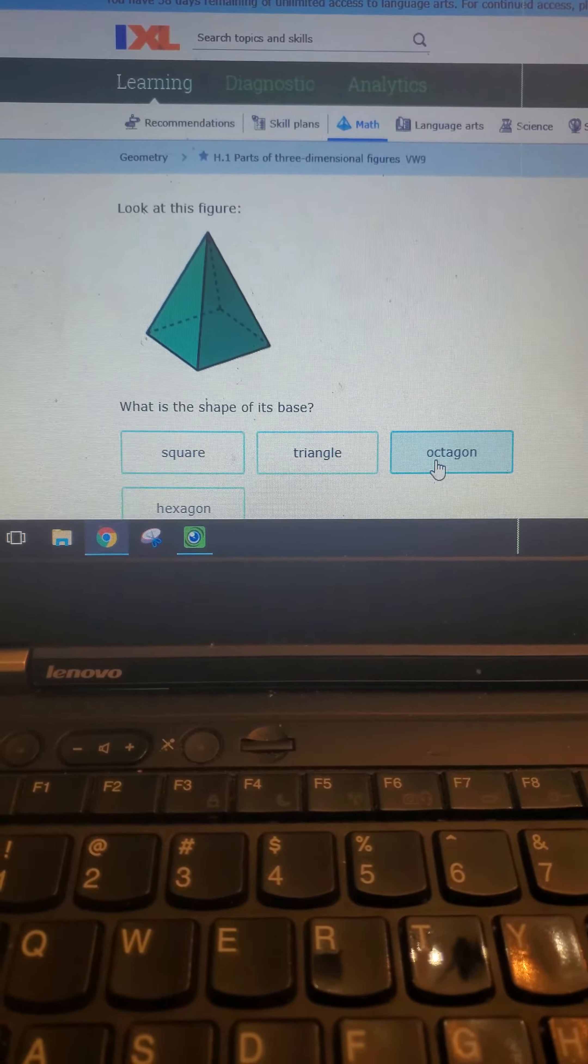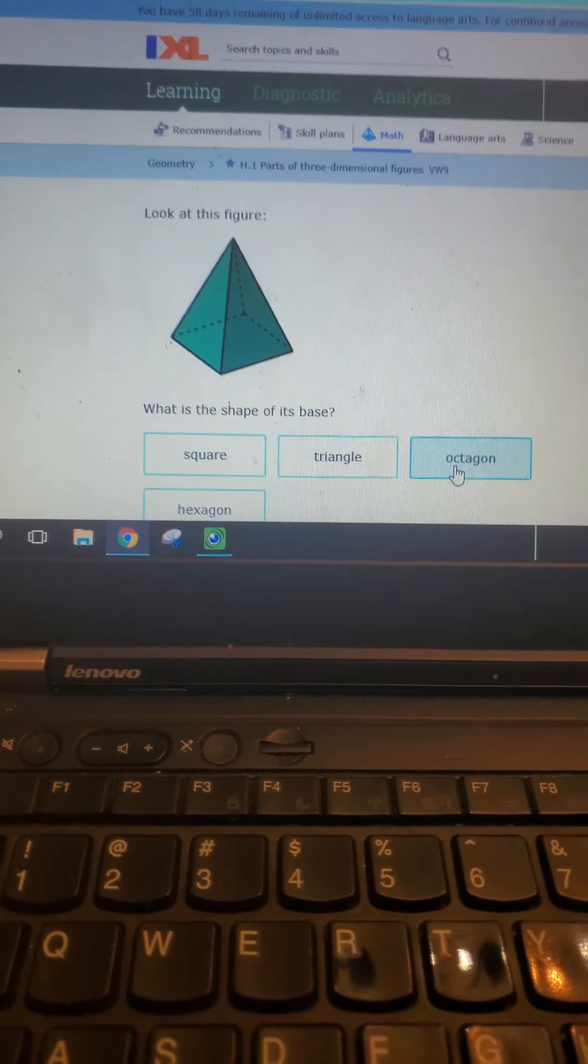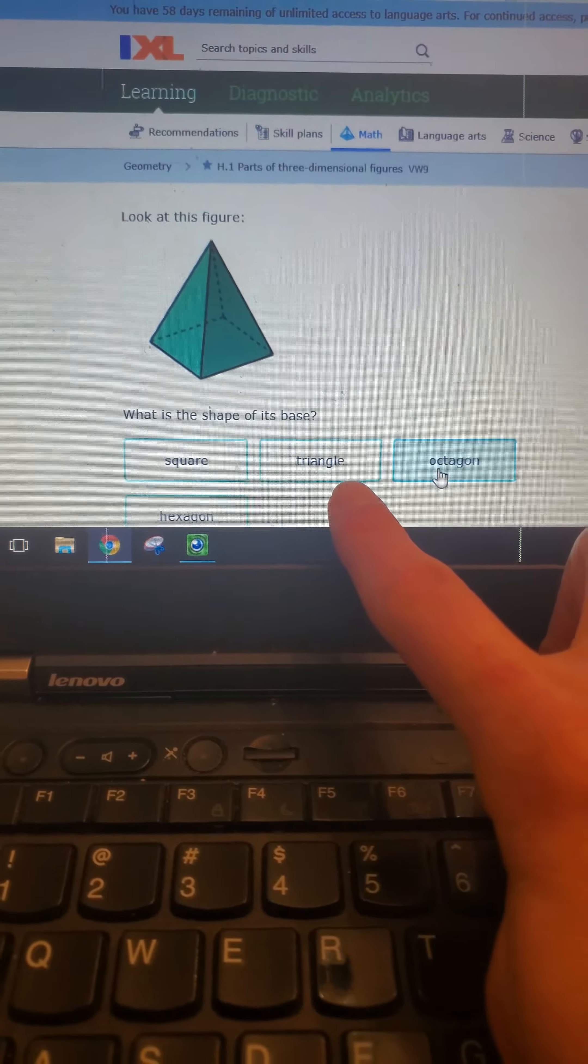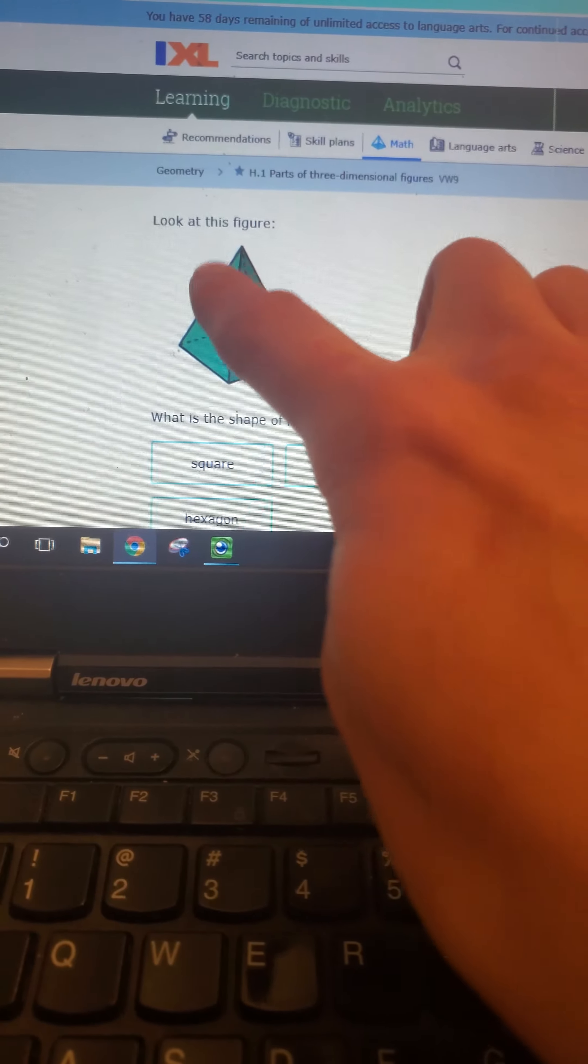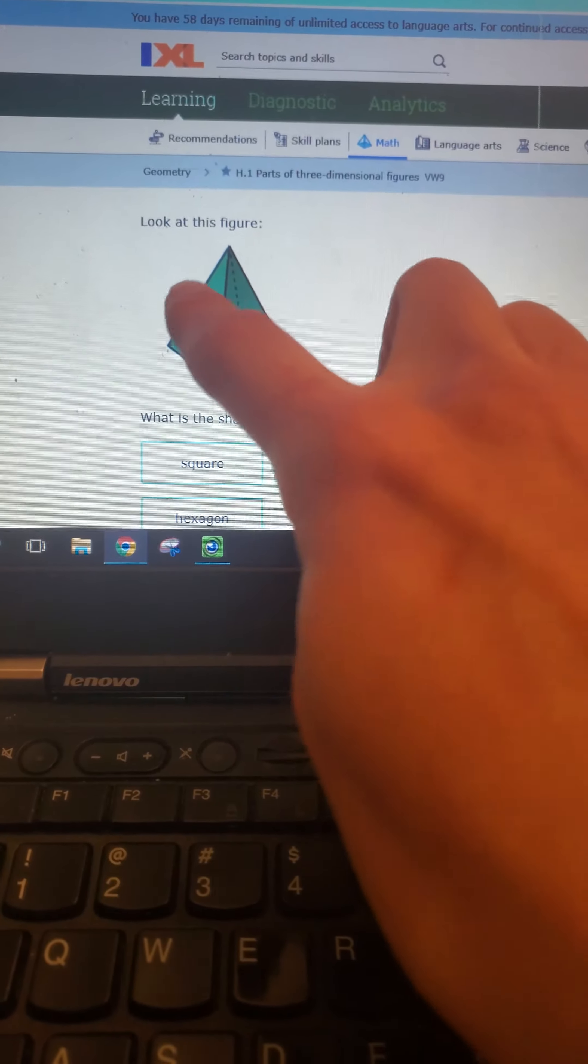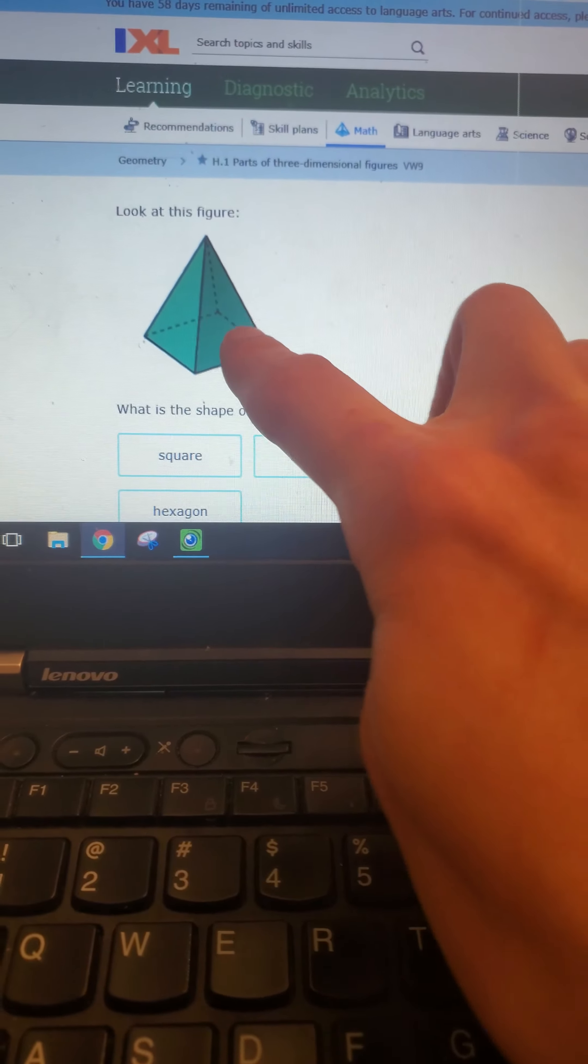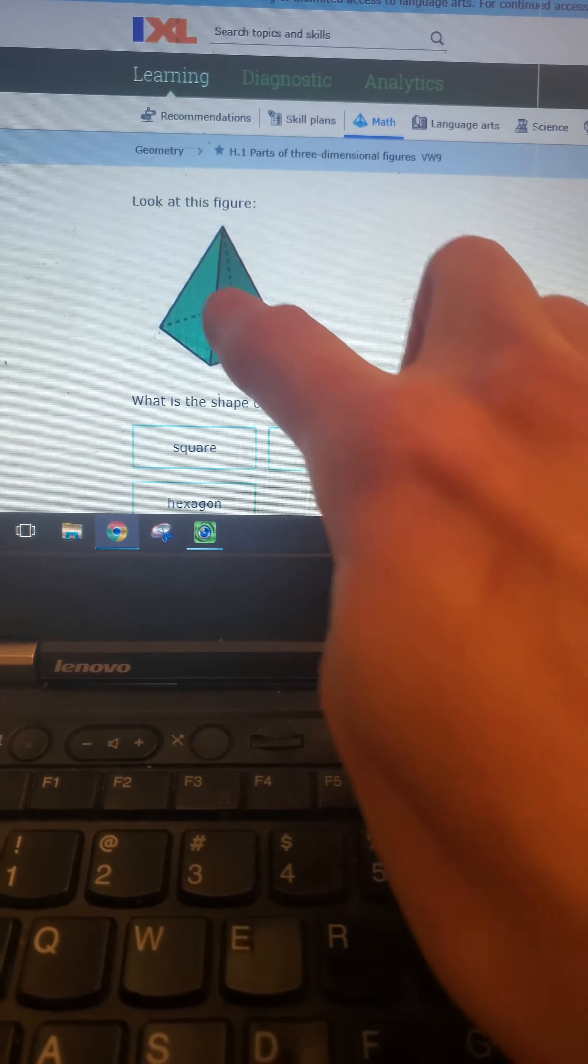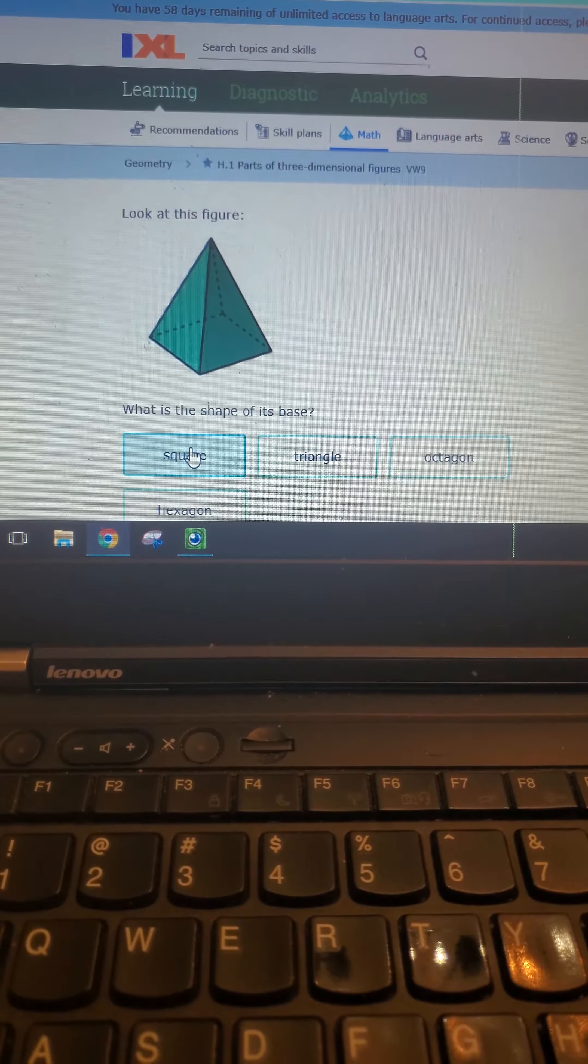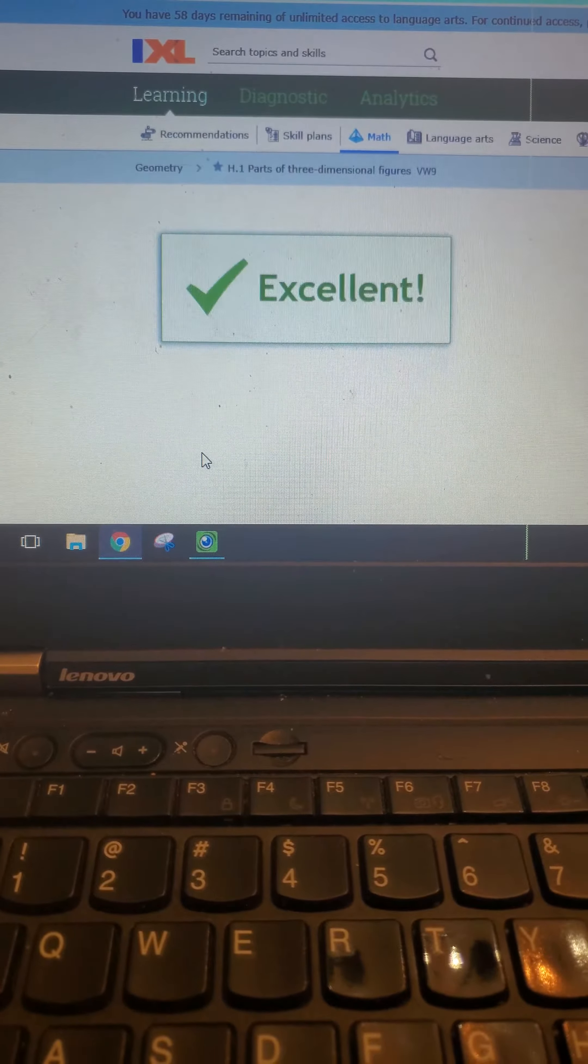What is the shape of its base? We have another pyramid here, but it's not a triangular pyramid, and that's one of my options. So we do have triangles here, but those are the faces. The base that it's sitting on, the one shape by itself here, is a square. So that's that base.